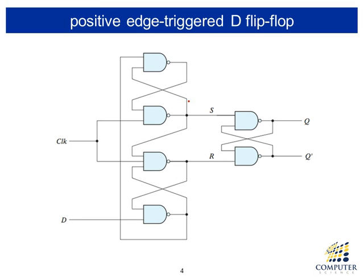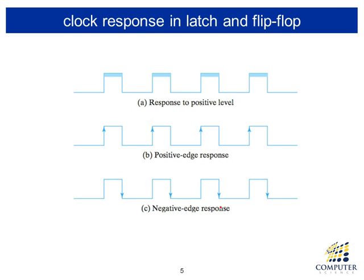To make a positive edge trigger — meaning the clock transitions from low to high — we can make a positive edge trigger D flip-flop with a slightly more complicated configuration, which you may figure out yourself. In summary, latches are level-sensitive, responding to the level of the clock, while flip-flops are edge-sensitive — triggered by either the positive (rising) edge or the negative (falling) edge. In this course, we will mostly consider negative edge trigger flip-flops.